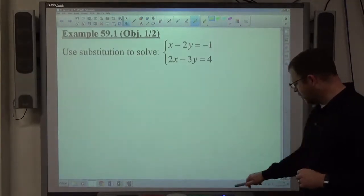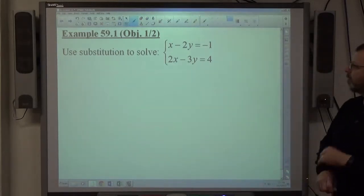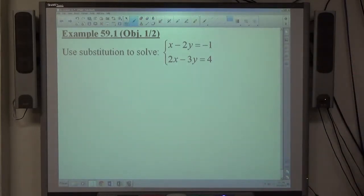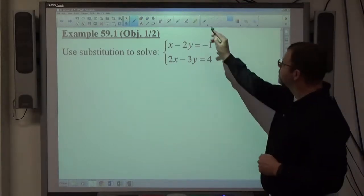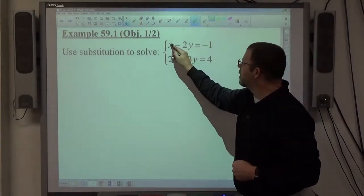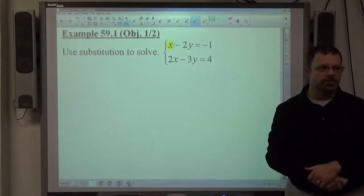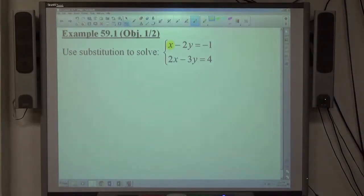Let's take a look at example 1. Use substitution to solve: x minus 2y equals negative 1, 2x minus 3y equals 4. What I'm looking for again in step 1 is that right there, 1x. Everything else, 2y, 2x, and 3y, I don't like them. 1x is my best friend. It makes it easiest.